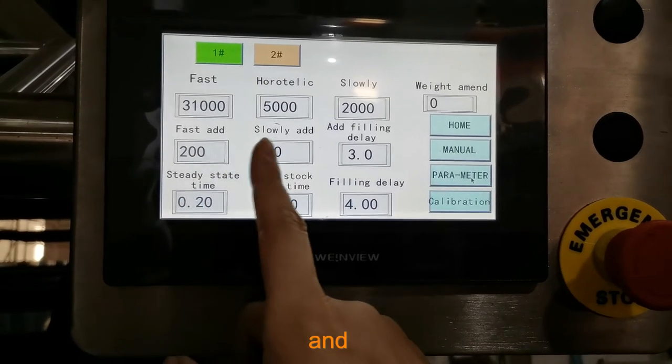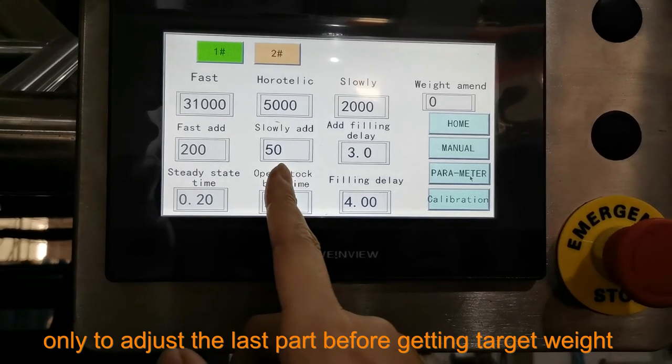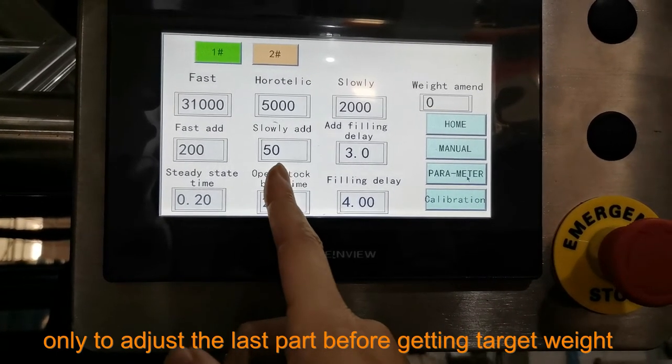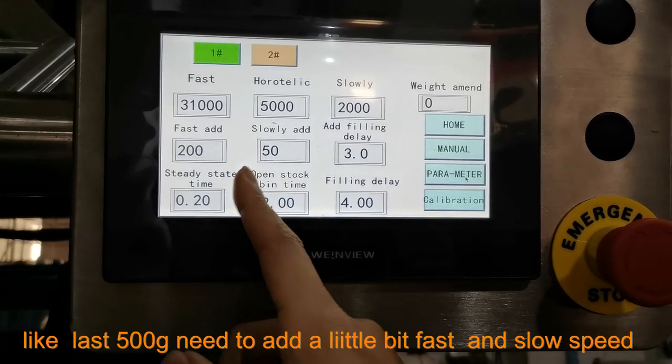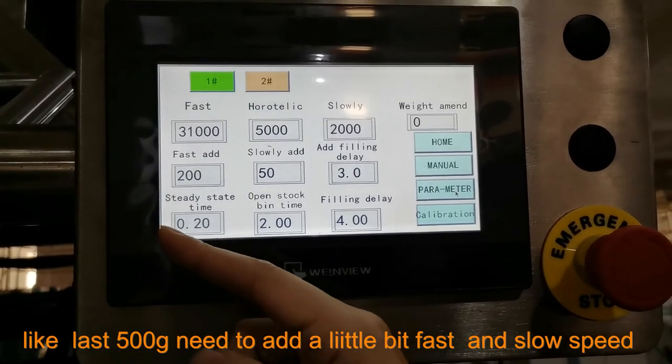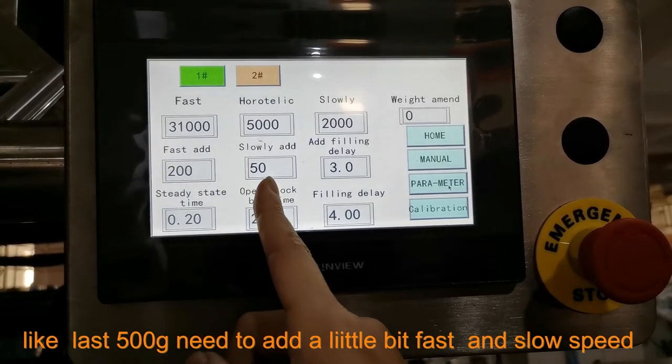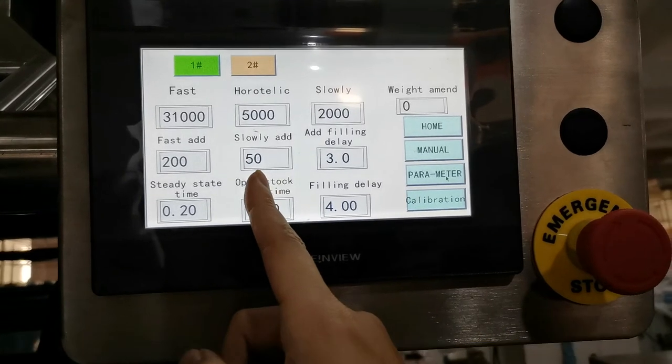Fast add and slow add only adjust the last part before getting the target weight. Like the last 500 grams, if that last 500 grams needs to add a little bit fast and slow speed.